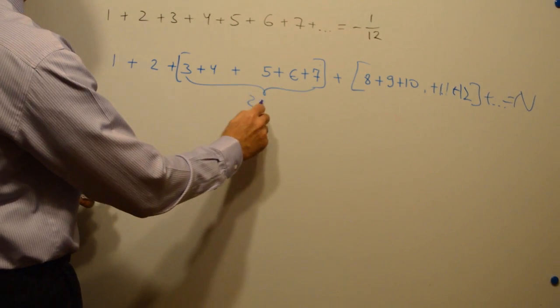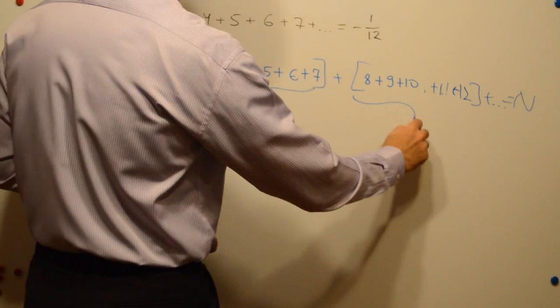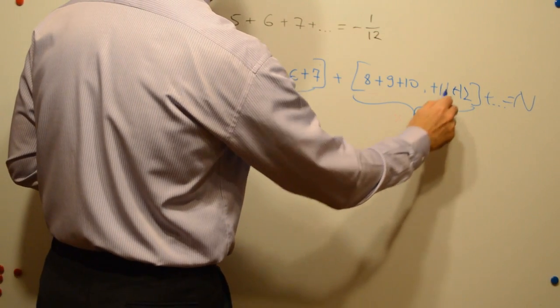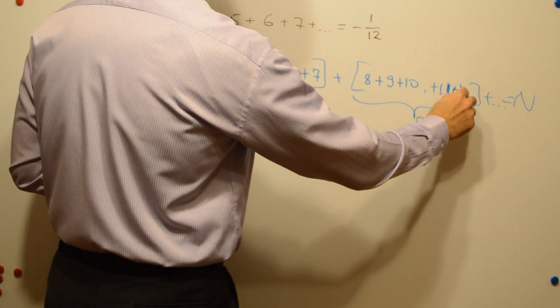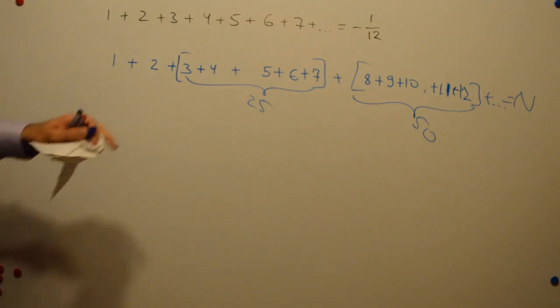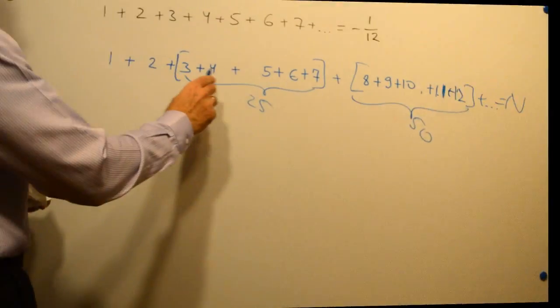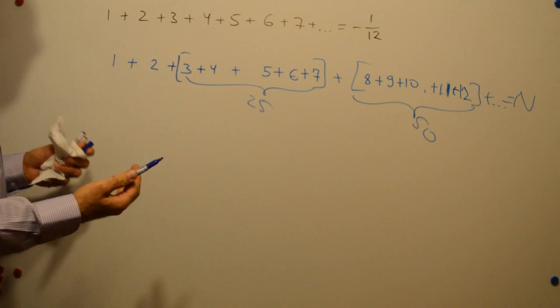It's 25 here and 50 here. Then it will be 75 and so on. So basically they are multiples of 25.